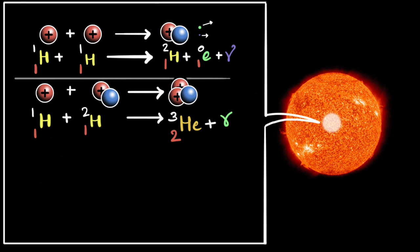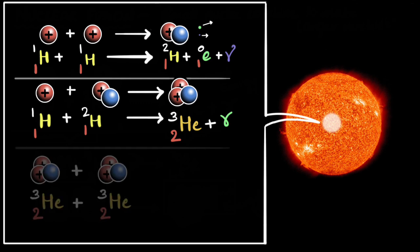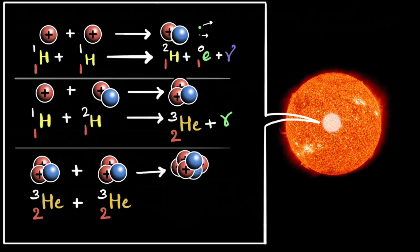But once the helium-3 is formed, the sun will also fuse helium-3 nuclei together. And when that happens, we'll get again an unstable nucleus with four protons and two neutrons over here. But since it's incredibly unstable, it will just release two protons away. And look, we finally get our helium-4 nucleus.